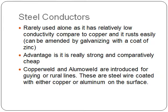Steel conductors are rarely used alone, as they have relatively low conductivity compared to copper, and they rust easily, though this can be amended by galvanizing with a coat of zinc. However, the advantage is that steel is very strong and comparatively cheaper than the alternatives. There is also new technology called CopperWeld and AluminumWeld, introduced specifically for guiding on rural lines — these are steel wires coated with either copper or aluminum on the surface.